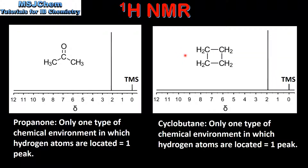Next we look at the NMR spectrum for cyclobutane. By looking at the structure of cyclobutane we can see that there are four carbon atoms bonded in a cyclic structure. The hydrogen atoms or protons in each CH2 group are in the same chemical environment. So once again we only have one type of chemical environment in which hydrogen atoms are located and we see one peak on the NMR spectrum.